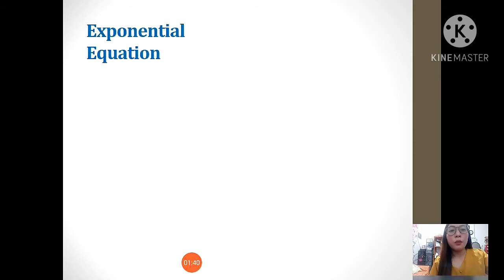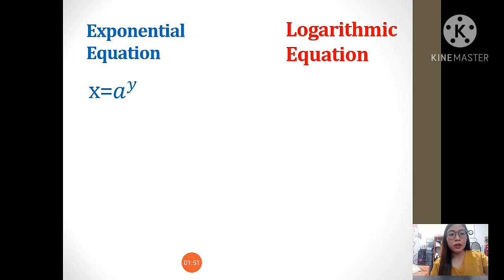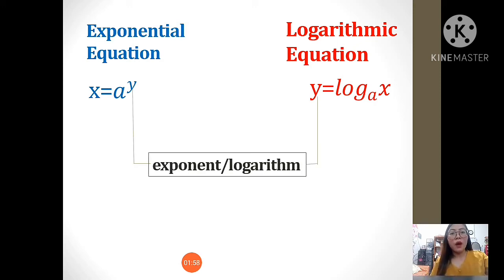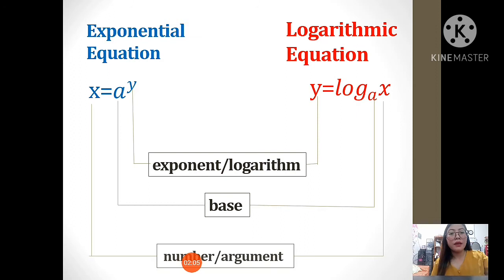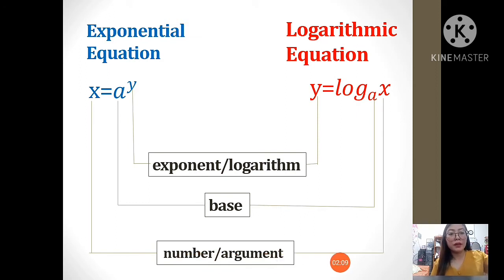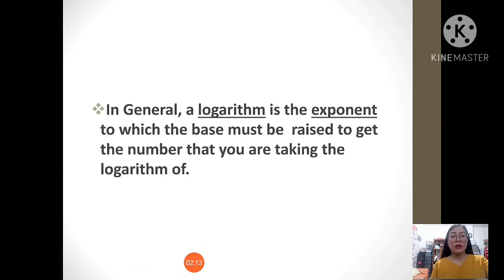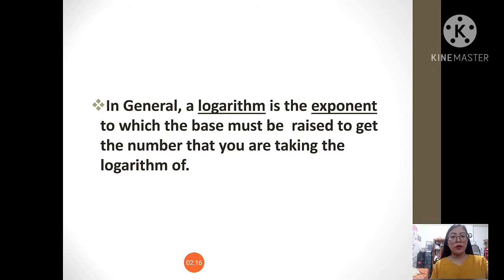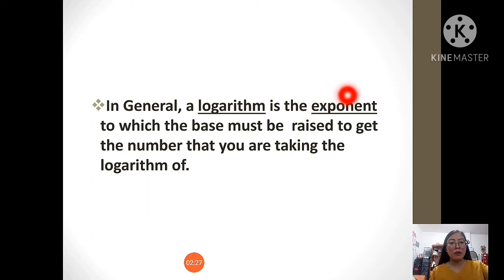Now, let's look at the parts of each type of equation. In exponential equation, x equals a raised to y. In logarithmic equation, it can be written as y equals log of x to the base of a. Here, y is the exponent or logarithm, while a is the base and x is the number or argument. In general, a logarithm is the exponent to which the base must be raised to get the number that you are taking the logarithm of. In simple terms, logarithm is the exponent. The purpose of logarithm is to tell you the exponent.